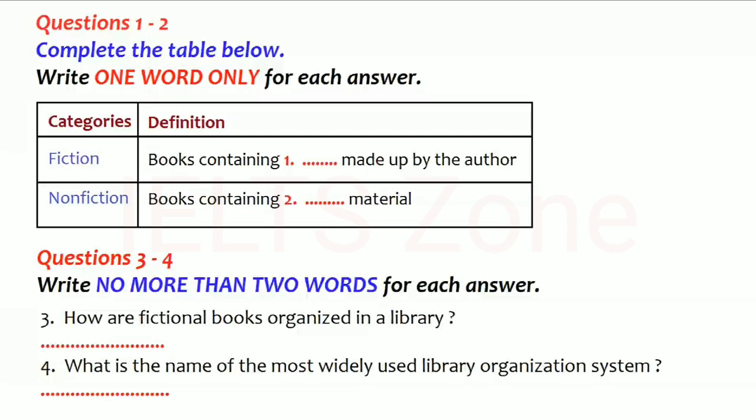Books of fiction contain stories that were made up by the author. Books of non-fiction contain factual material. When doing research, you use non-fiction books because you are looking for factual information.